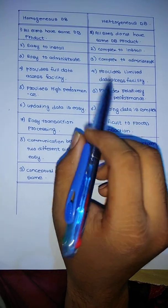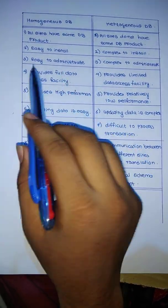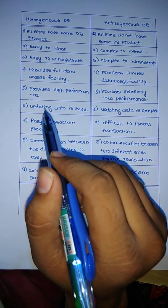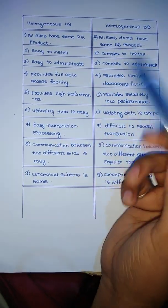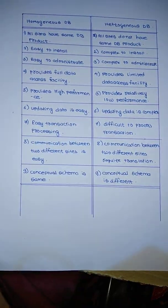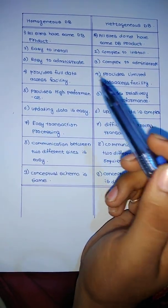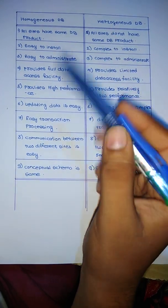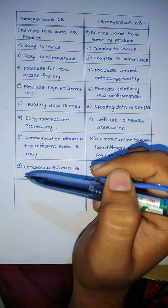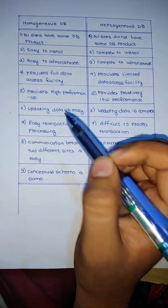Now this was the basic difference between homogeneous and heterogeneous. I will explain the differences in detail, and lastly I will give you a trick on how to remember them. Because when we learn the difference between two things, we know the difference but while writing on the exam we don't remember all the points. So I will give you some tricks to remember all the points.